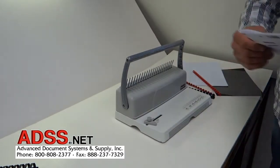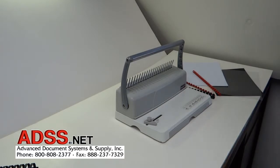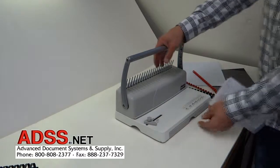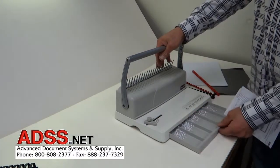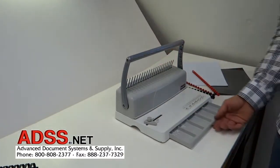Here we have the PB Pro 101. It is an affordable comb binding machine. It punches up to 12 sheets of paper. It has a front accessed chip drawer for easy access for emptying.